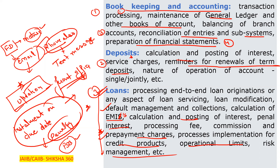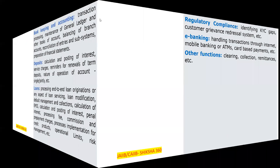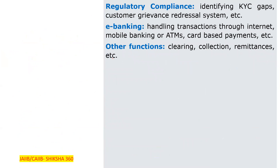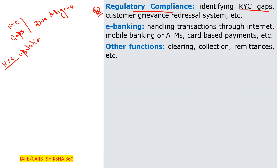So till now we have discussed three functions: bookkeeping and accounting, deposits, and loans. The fourth function is regulatory compliance, which includes identifying KYC gaps — for example, as per risk categorization, high-risk customers need KYC re-updated every two years, medium-risk every eight years, and low-risk every ten years. The back office checks all these things and sends messages to the respective customers.